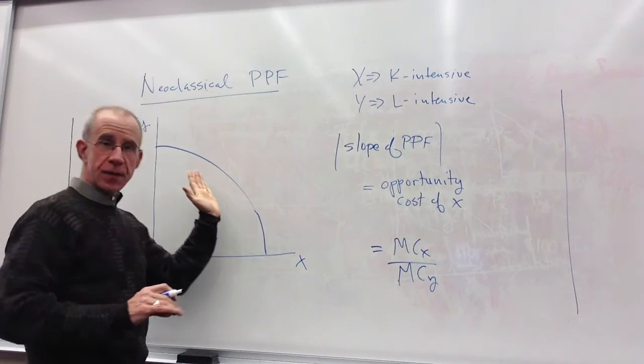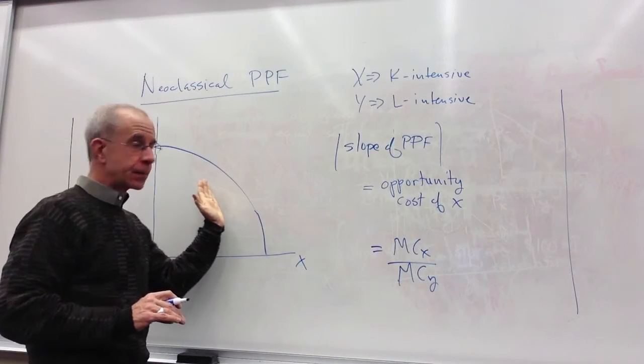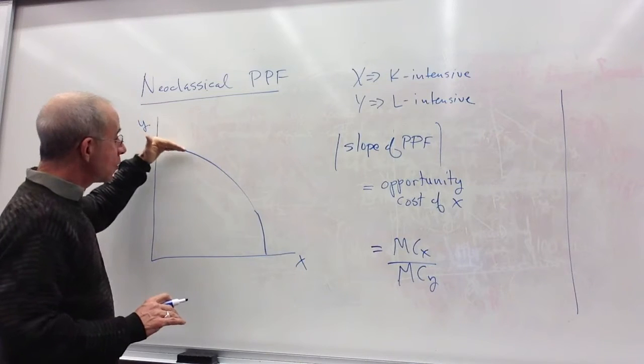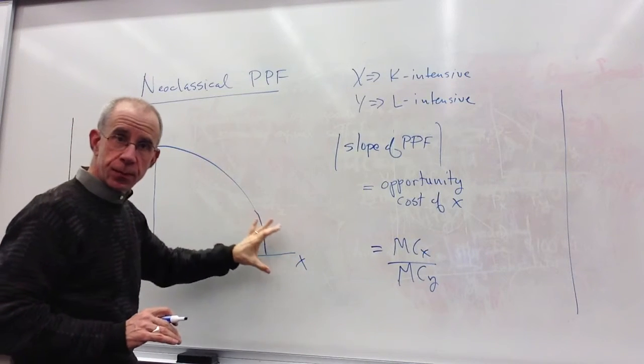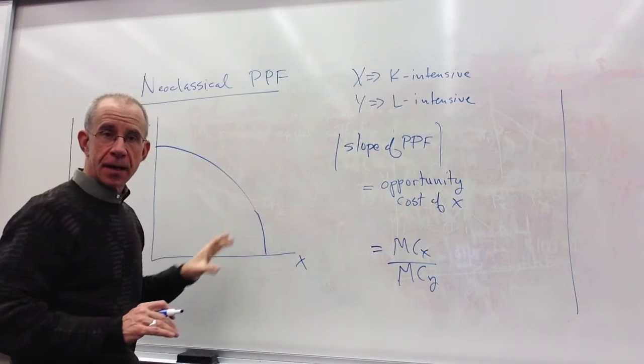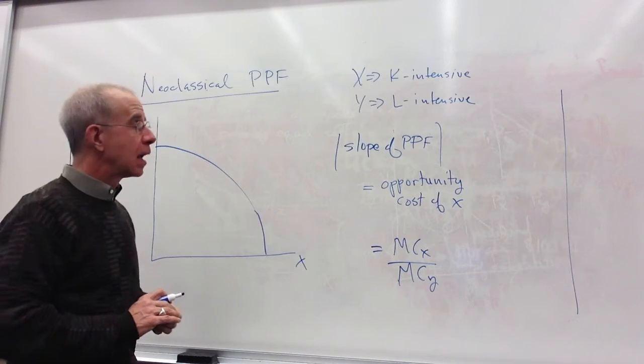Now if you look at this PPF, you can see that the slope of this curve changes as you produce different combinations of X and Y.